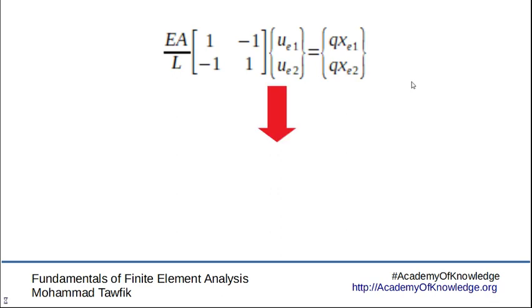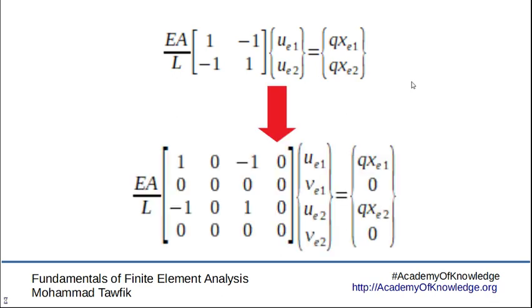Now let's expand this by introducing v1 and v2. Already v1 and v2 are zeros, and we don't have forces qy1 or qy2 in the local axis. However, now we have four equations. Two of them are redundant, they don't say anything extra, but it's written now in terms of four degrees of freedom in the local axis.